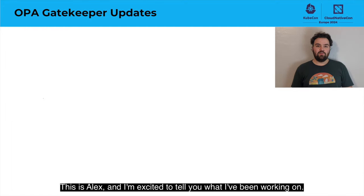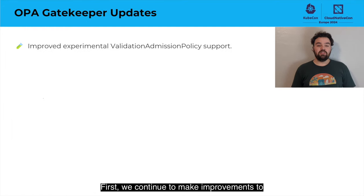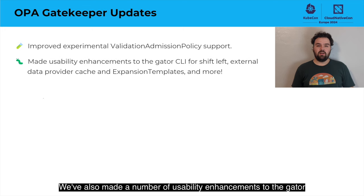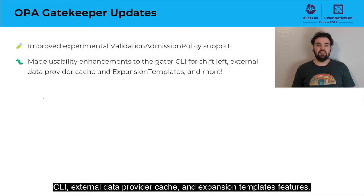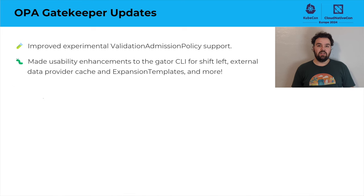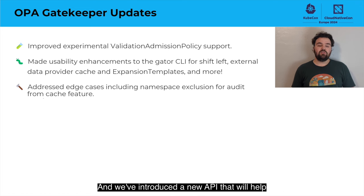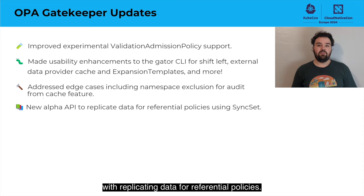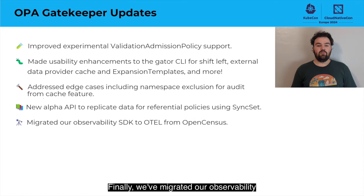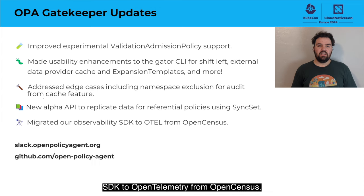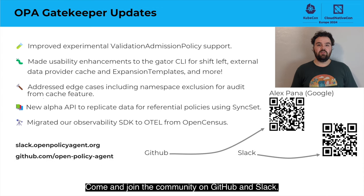This is Alex, and I'm excited to tell you what I've been working on. First, we continue to make improvements to the validation and admission policy support. We've also made a number of usability enhancements to the Gator CLI, external data provider cache, and expansion templates features. We've also addressed some corner cases, such as namespace exclusion for the audit-from-cache feature, and we've introduced a new API that will help with replicating data for referential policies. Finally, we've migrated our observability SDK to OpenTelemetry from OpenCensus. Come enjoy the community on GitHub and Slack.